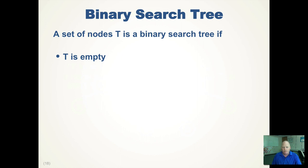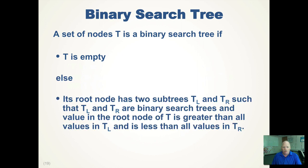A binary search tree is a special kind of binary tree. It is a binary search tree if it's empty, or if its root node has two subtrees, tree-left and tree-right, such that they are also binary search trees. The key property is that the value in the root node is greater than all values in the left subtree and less than all values in the right subtree — this is recursive throughout the tree.